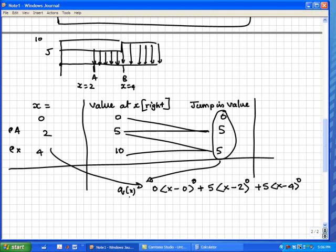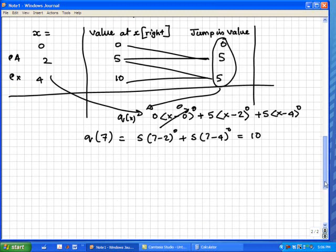If I am given q(x), let us see if we can actually find how much is q(7). That is easy. The first term is all 0, so there is nothing much to worry about. I put 7 here. I know that 7 is greater than 2, that is no problem. It will give me 5 times (7 - 2) to the power 0 plus 5 times (7 - 4) to the power 0. Both of them gives me very simple, that gives me 10. Is that correct? Yeah, beyond x equal to 4 is 10.